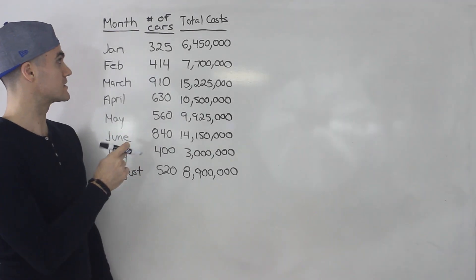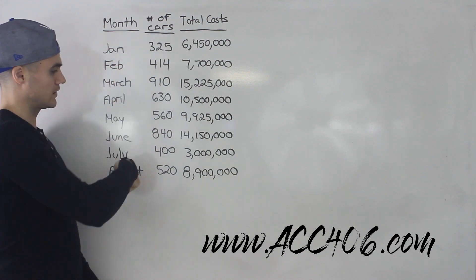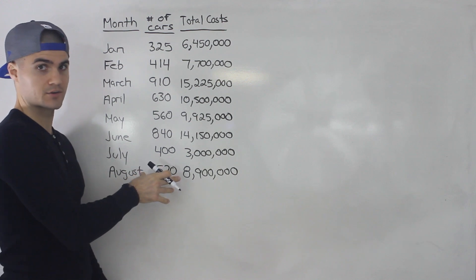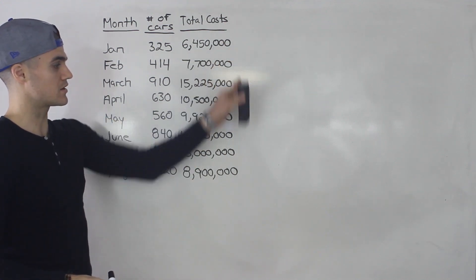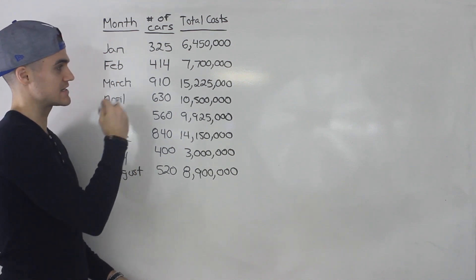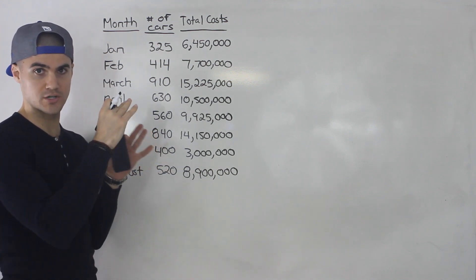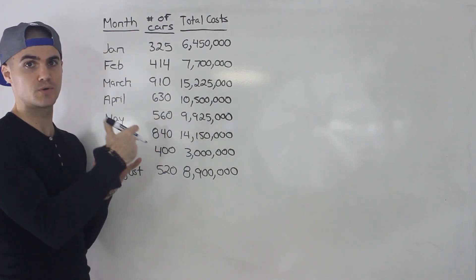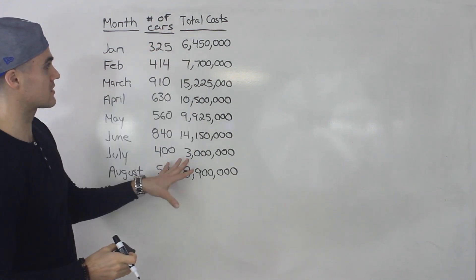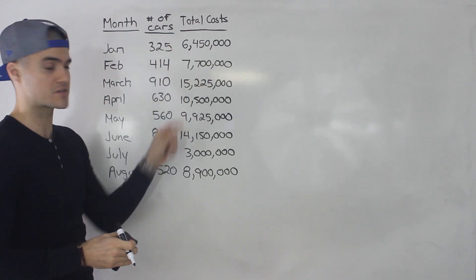For example, let's say we're given something like this. In each of these months from January to August, we're told how many cars are produced in the factory during that month and what the total cost per month is. Now I want you to sort of forget about these months for now. We're given the output and we're given the total cost for that respective output.